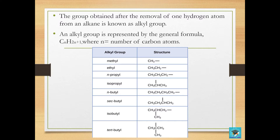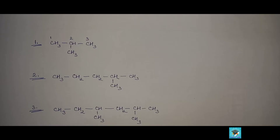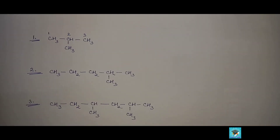The group obtained after the removal of one hydrogen atom from an alkane is known as an alkyl group. The general formula of an alkyl group is CnH2n+1, where n equals the number of carbon atoms. Here we have a table showing the different alkyl groups and their structures, followed by a few examples.